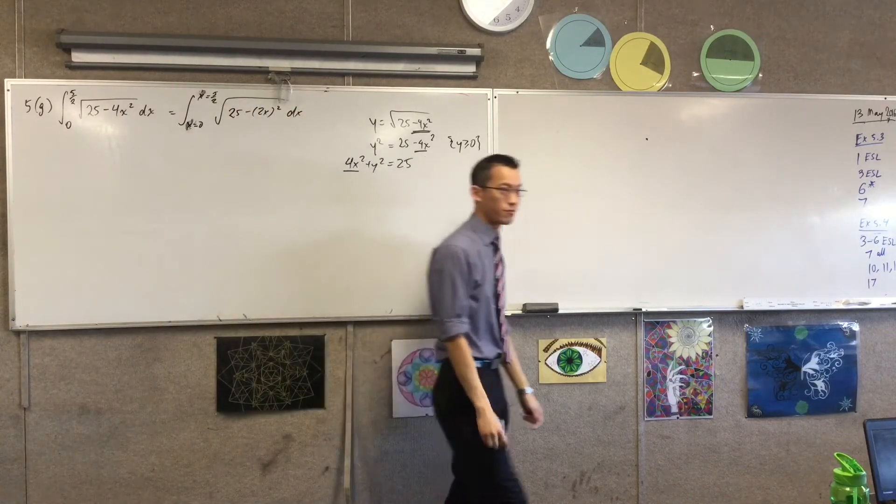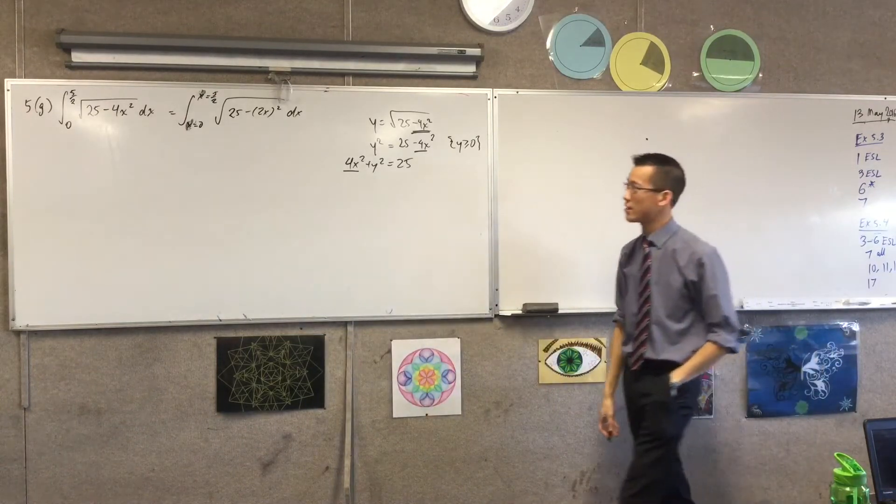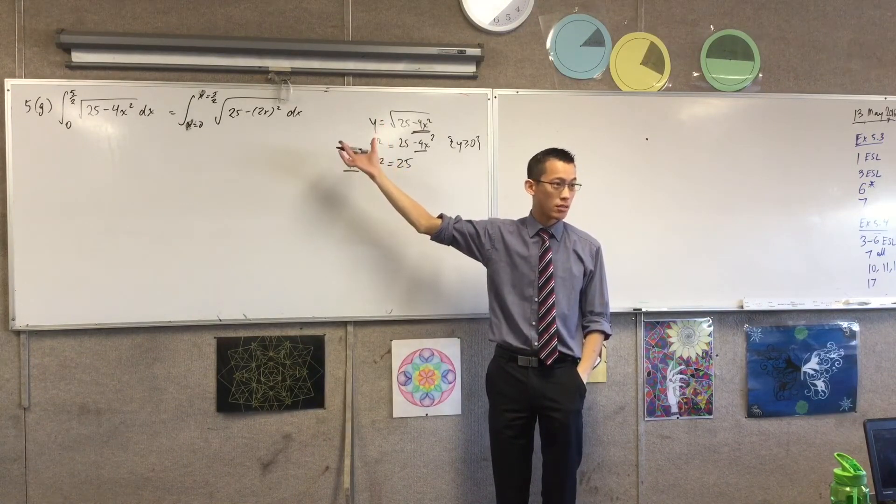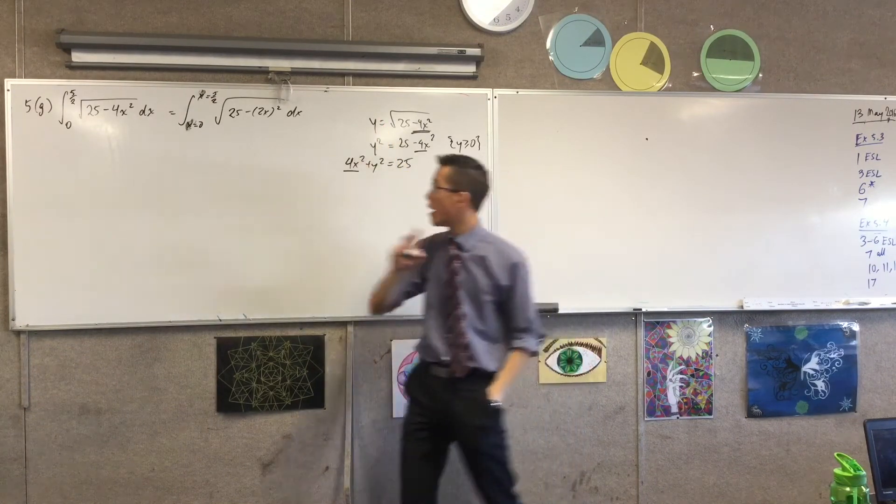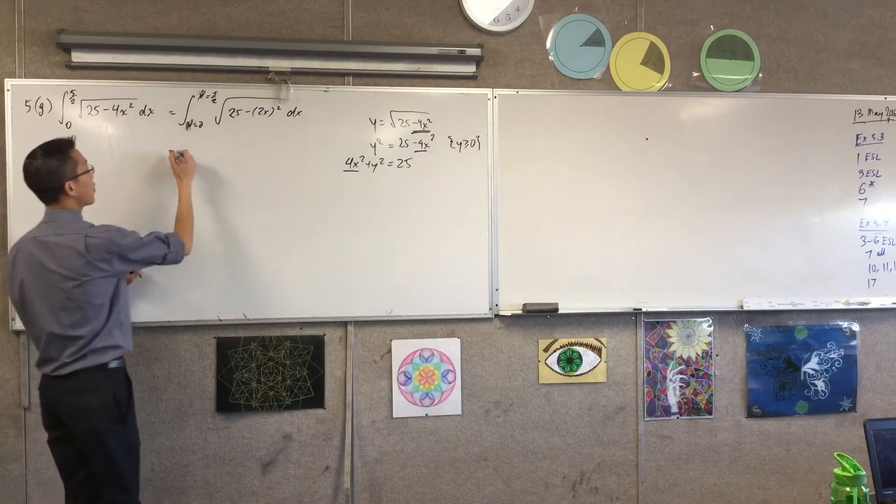And now I'm ready to do my substitution, right? Because this is a simple one, I'm just going to do this. I think we can do this in our heads and do it quickly. I'm going to let u equal 2x, right? So what's du on dx? It's 2. I don't have a 2 in this, so I'm going to have to compensate by multiplying by a half. So this is what I'm going to get.